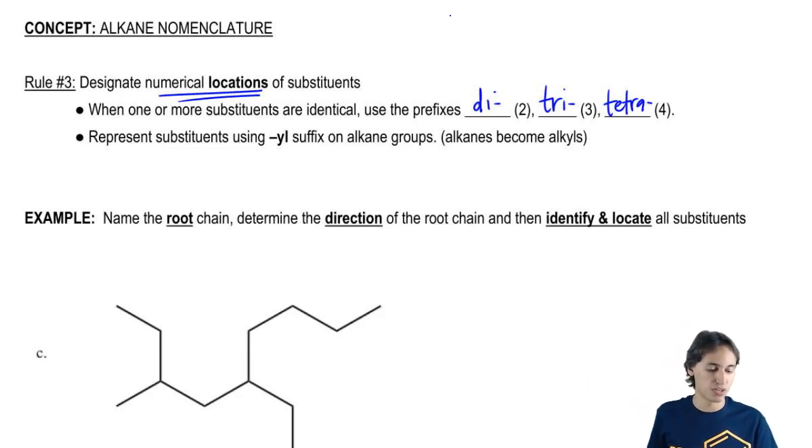So for example, let me just give you an example. Here I have a long chain and then I have a two-carbon chain coming off of it.